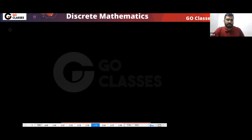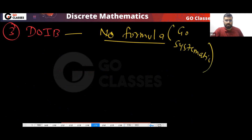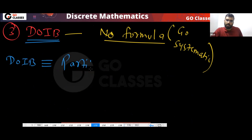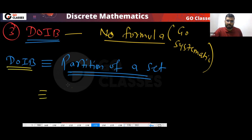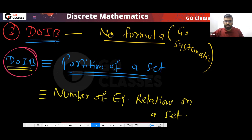Now the next template, the third template, is DOIB. For DOIB, there is no formula. So always go systematic. Which problems follow the DOIB template? The DOIB template is followed by partition of a set and also the number of equivalence relations on a set. These two will follow the DOIB template.